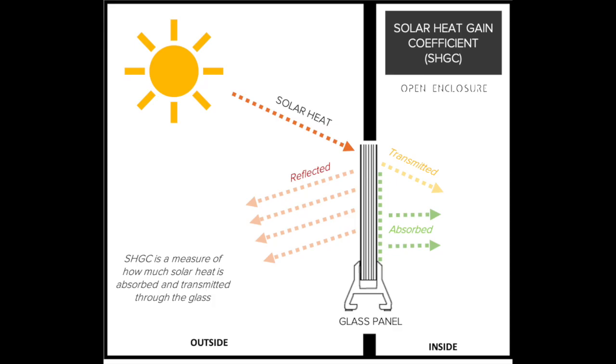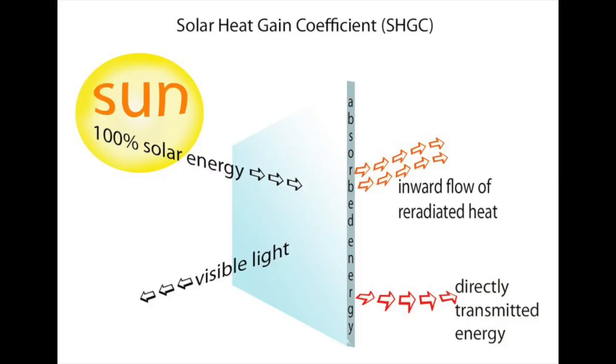The building's climate, orientation, and external shading will determine the optimal SHGC for a particular window, door, or skylight.